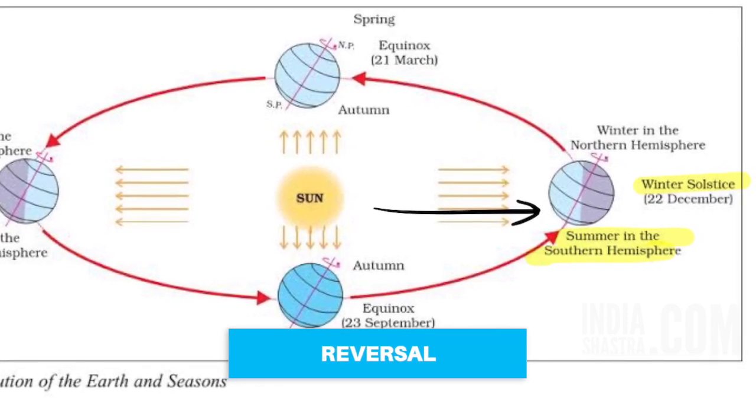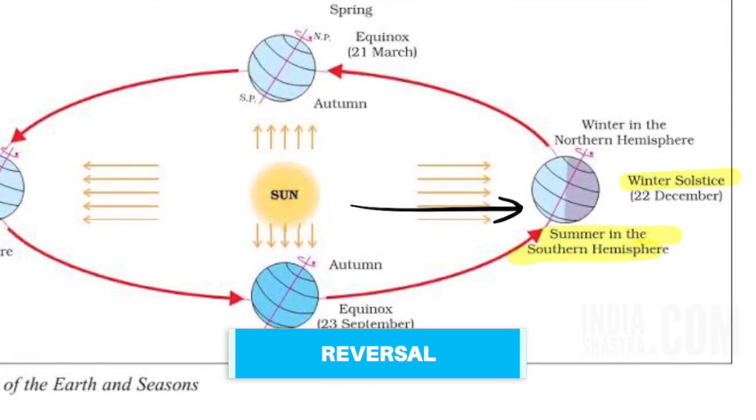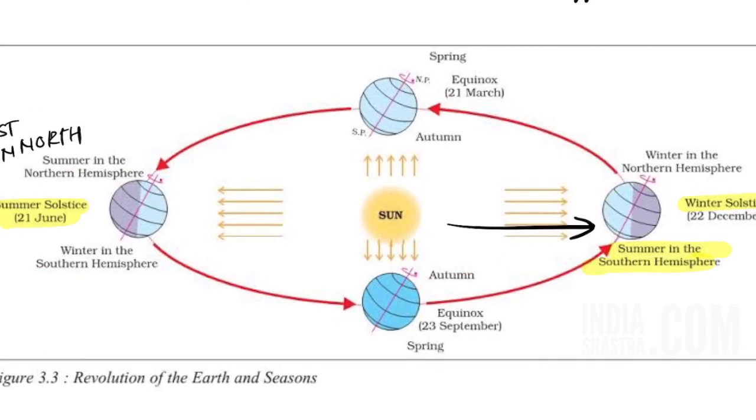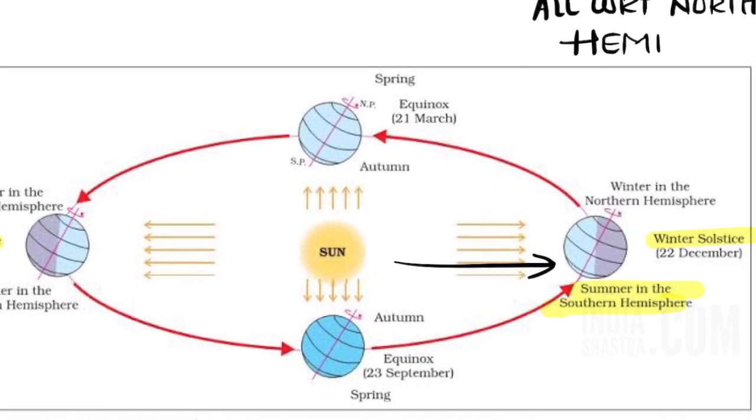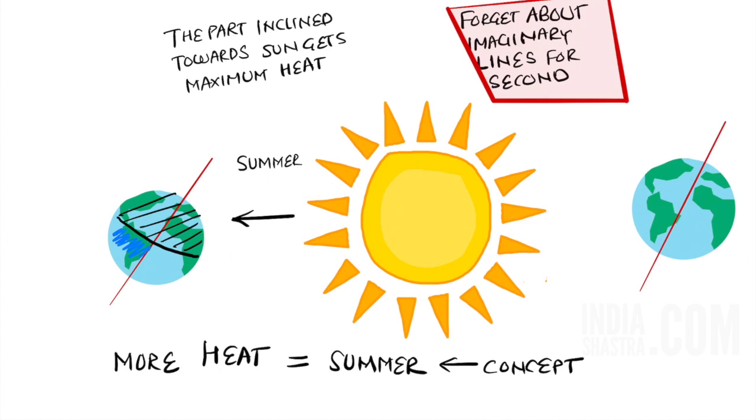We call it winter solstice because all the imperial countries were in the Northern Hemisphere. Without going much in history, let us discuss some more facts. If there is summer in Northern Hemisphere, it is going to be winter in the Southern Hemisphere. What is happening in the Northern Hemisphere with respect to season, exactly opposite happens to Southern Hemisphere.